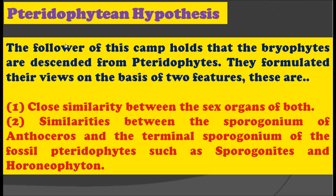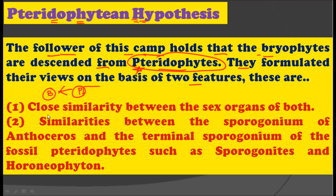The followers of the pteridophytean hypothesis hold that bryophytes are descended from the pteridophytes. To support this view, they give two points. First, there is a close similarity between the sex organs of bryophytes and pteridophytes.